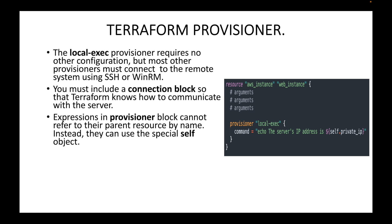As you can see, I'm not referring to the resource by name; rather I'm using the special self object. When using a provisioner block, we do not use the resource name — we use the self object. In this case, self is the same as saying aws_instance.web_instance.private_ip, because we are calling this within the same resource block and it will be able to fetch the information for us.